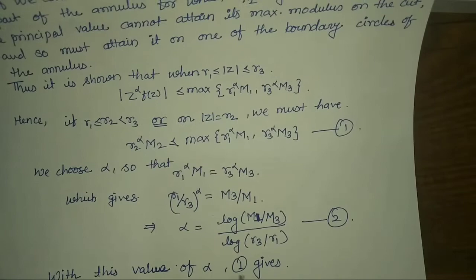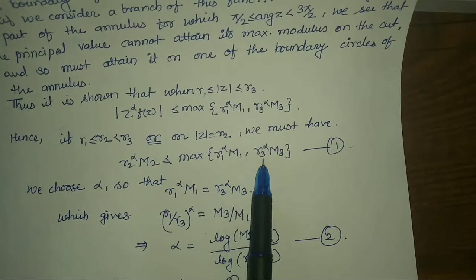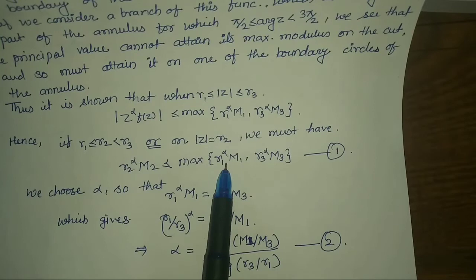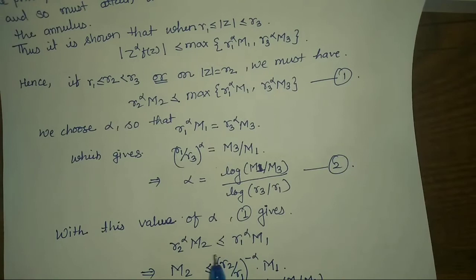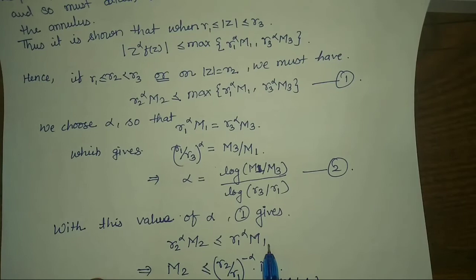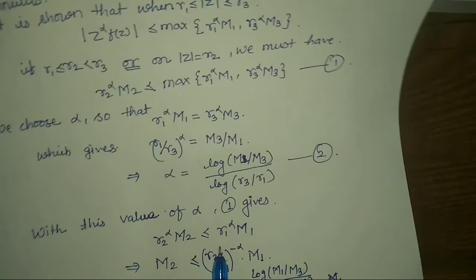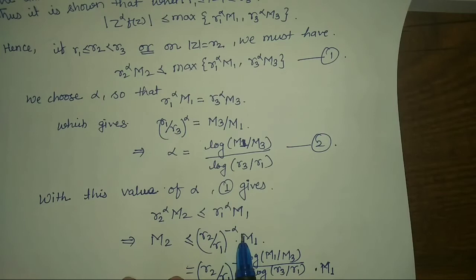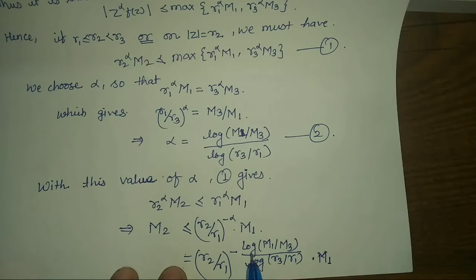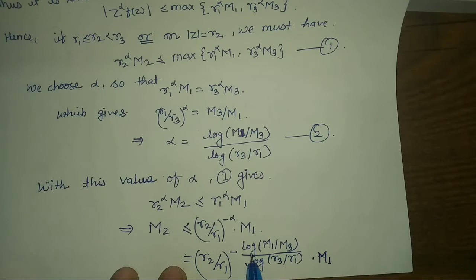Now with this value of alpha, since we have chosen alpha so that both sides are equal, from equation number 1 we have R2 to the power alpha times M2 less than or equal to R1 to the power alpha times M1. Therefore, M2 is less than or equal to R2 divided by R1, all to the power minus alpha, into M1. Now substituting the value of alpha from equation number 2, we get R2 by R1 to the power minus log(M1/M3) divided by log(R3/R1), into M1.